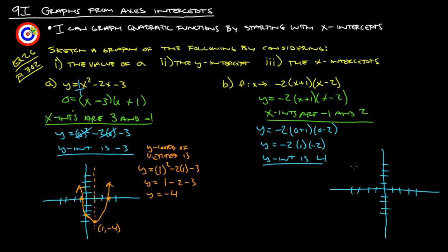Our x-intercepts are at negative 1 and at 2. The y-intercept is at 4. So we know it's going to look something like this. This is 1, 2, 3 across here. So really, our line of symmetry is going to be here at 1 half. Not going to be very fun to plug in 1 half. Good news is we don't really have to. It's just going to be roughly up here somewhere. And then sketch it down like that.